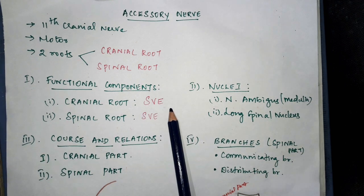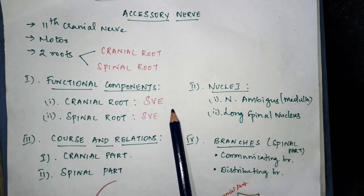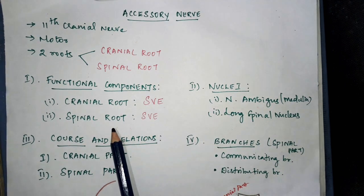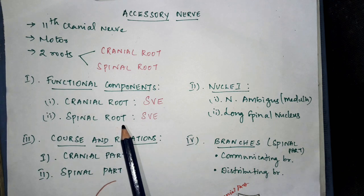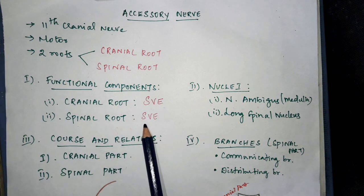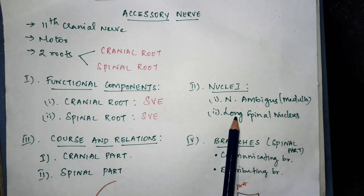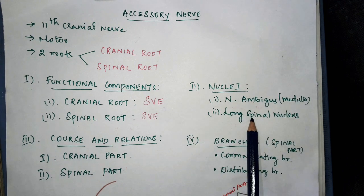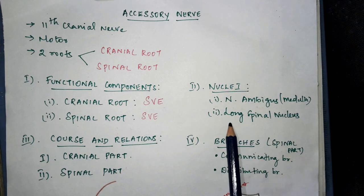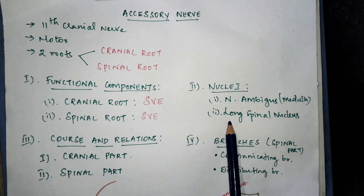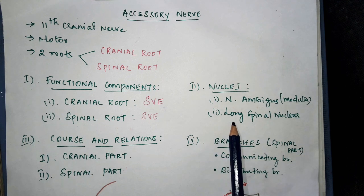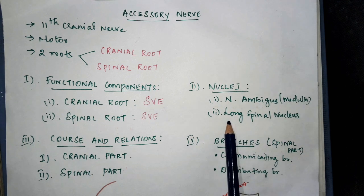The spinal root is also special visceral efferent. It takes origin from the long spinal nucleus, which is situated in the spinal cord on the lateral part of the anterior grey horn, extending from C1 to C5 segments.